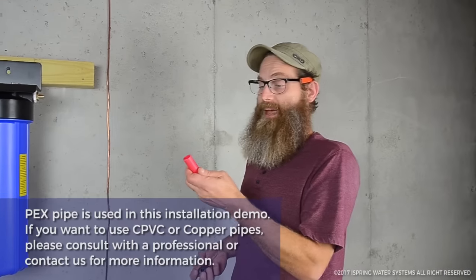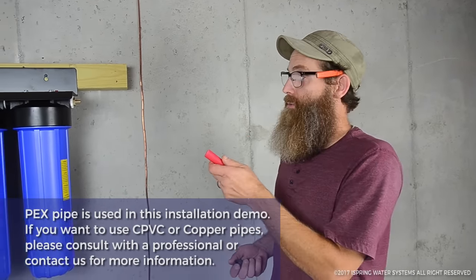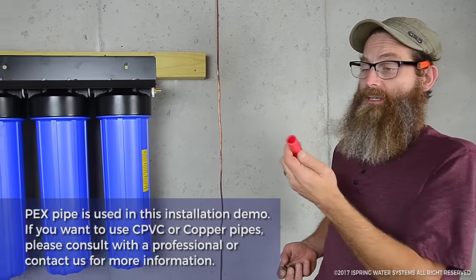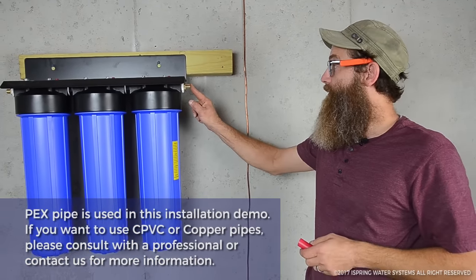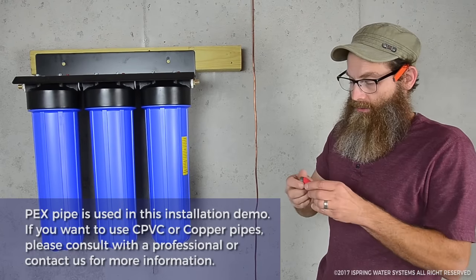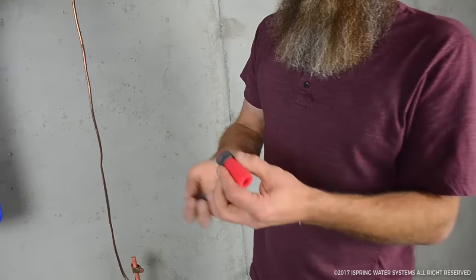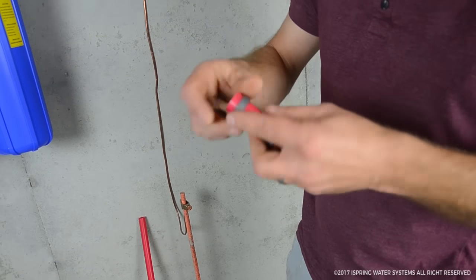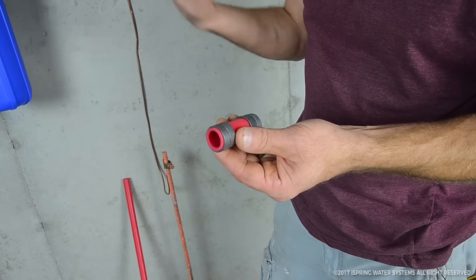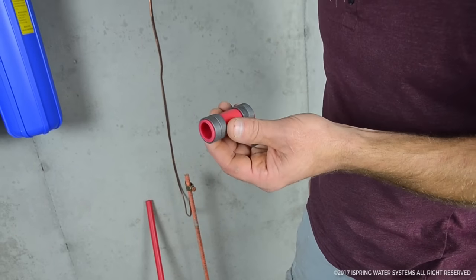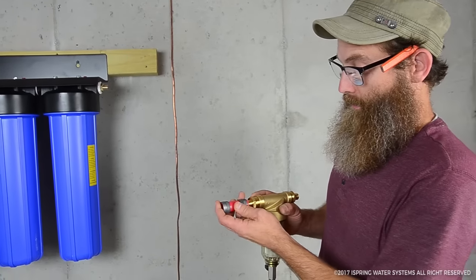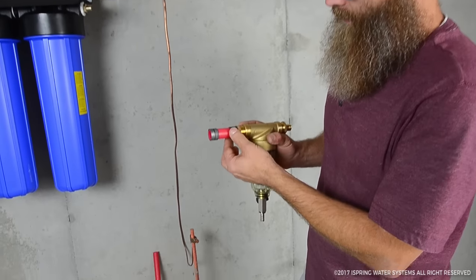So I have PEX that we're using on this job because the plumbing that comes into the house is PEX and we're sticking with that. And we have an adapter from the one inch down to three quarter of an inch. So with the PEX you can use one ring or two rings when you do the crimp on these. I like to use two because it gives you twice as much surface area so it's a lot less likely to leak. And we push them in like this and then crimp it.